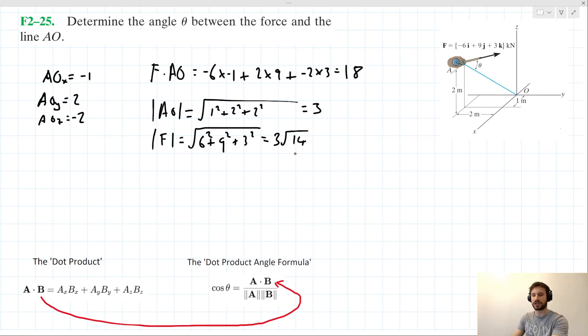OK, so it looks like we have all the things that we need to substitute in for our dot product angle formula here. So we can take the inverse cos of both sides of that formula. We can have theta be equal to the inverse cos of 18 over 3 times 3 root 14. Which again, when we substitute into our calculator, we get a value of 57.7 degrees, which is our solution for theta here.